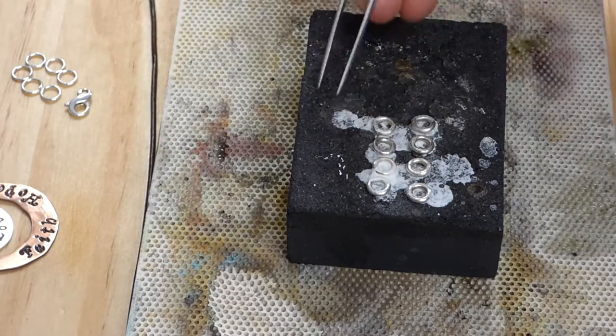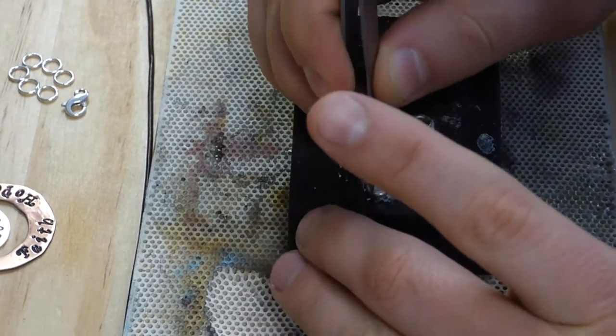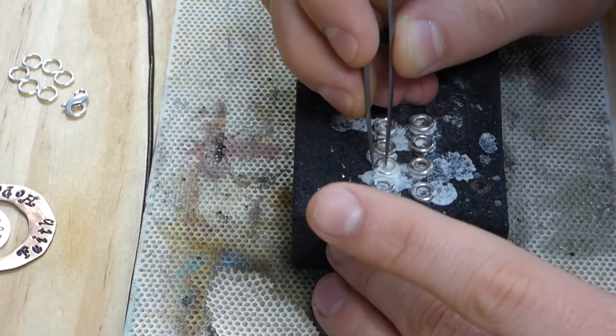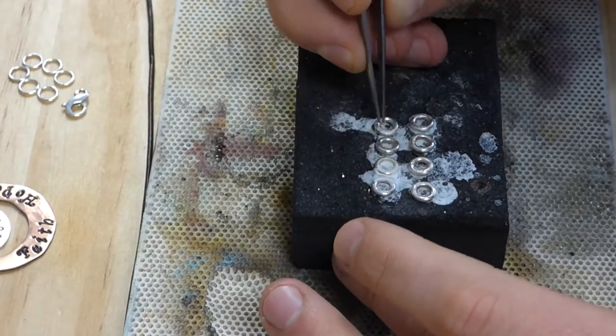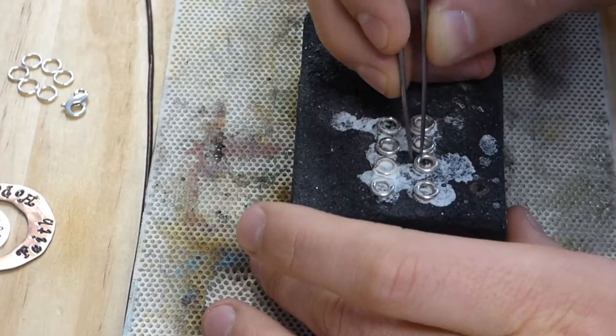I tuck the solder chips under the rings, right under the joints. I think it makes it easier than trying to balance it on top, especially when you're doing a large group of them like this. And the solder always flows towards the energy. So it's going to come up towards the heat being put into the rings there.